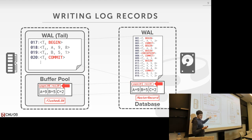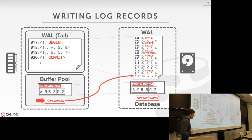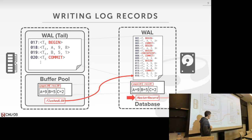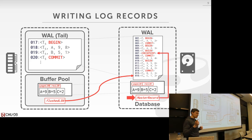The rec LSN is: since I brought this page into memory, what was the first log record that made this thing dirty? I need to know where my boundary is. Then we have the flush LSN — just the pointer to whatever was the last LSN that we wrote out to disk in the log. The master record is then just pointing to the last successful checkpoint that we took.